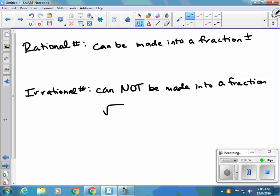For instance, the square root of 2 equals 1.41 and it just keeps going. With a rational number, if I have the square root of 36, this is going to be plus or minus 6, and that can be made into a fraction.